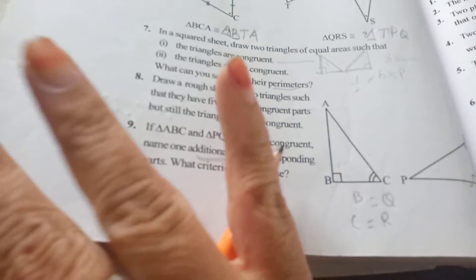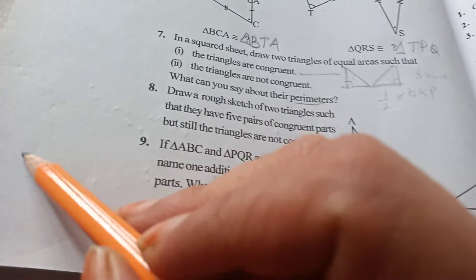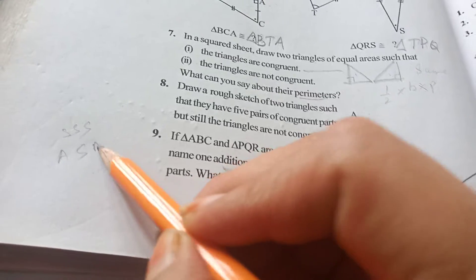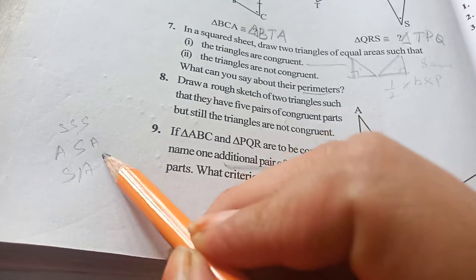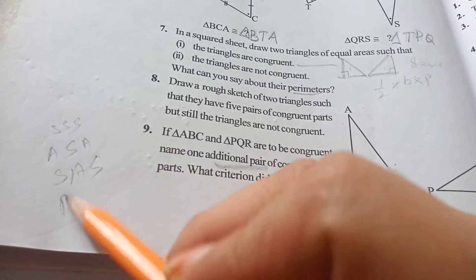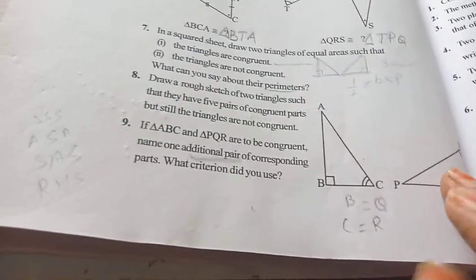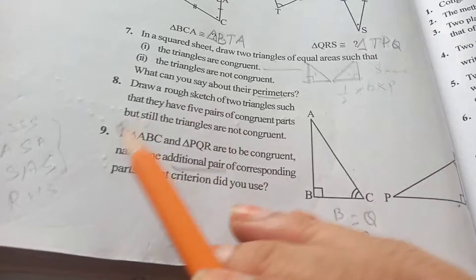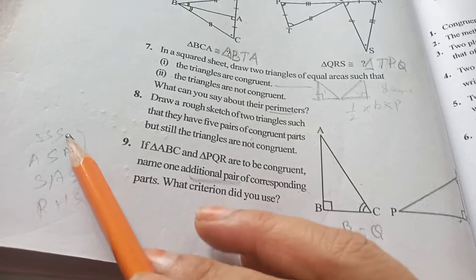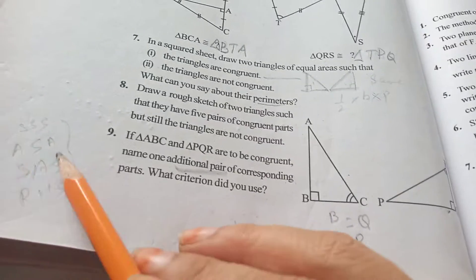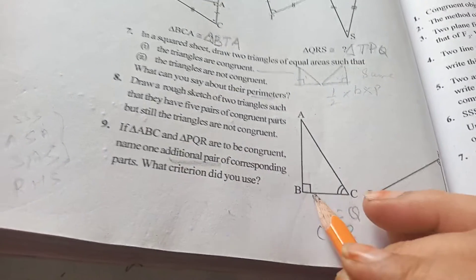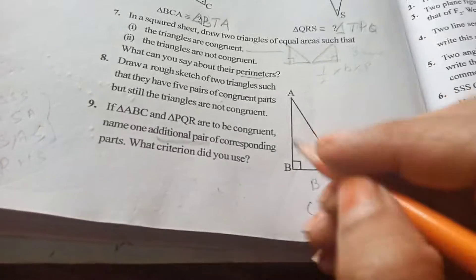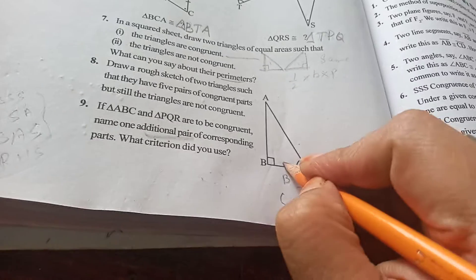We have learned four criteria that is SSS, ASA and SAS and fourth one is RHS. So RHS is not here, that we know. So from these three criteria or conditions, congruent condition which will come, see two angles are given, and we have to take one side. So this is the including side we have to take,